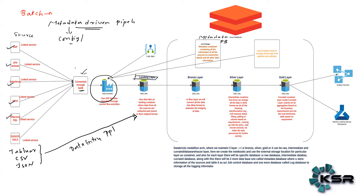Once we have data in the landing area, our main work starts. Up to this point, all we've done is bring data from on-prem or other sources to the cloud — no transformation yet. In some projects where the team is large, a data ingestion team handles this part, and you might start working directly from the landing layer. The number of pipelines to bring data depends on the number of sources — for six sources, we create six different copy activities with separate pipelines, with child pipelines associated as needed.